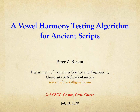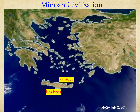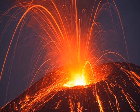I'm going to present a vowel harmony testing algorithm for ancient scripts. The motivation for this research stems from a study of the Minoan Bronze Age civilization, which was centered on the island of Crete with major palaces at Knossos and Phaistos. In 1600 BC, a volcanic eruption on the island of Santorini destroyed much of the Minoan civilization, and soon the palaces were forgotten.